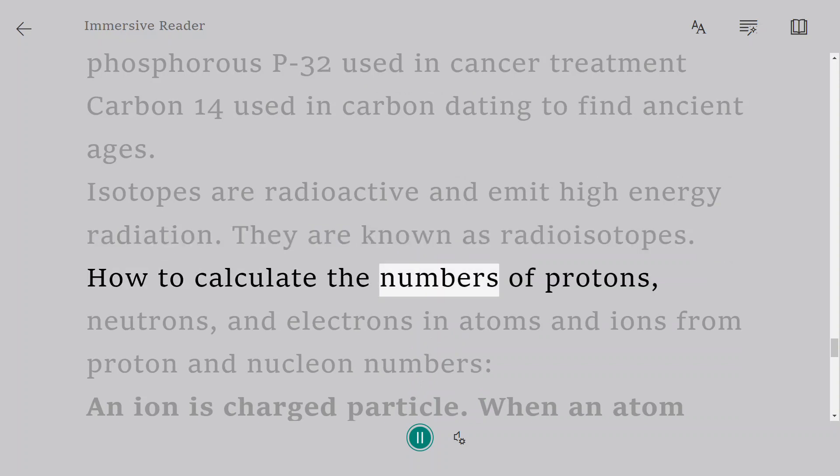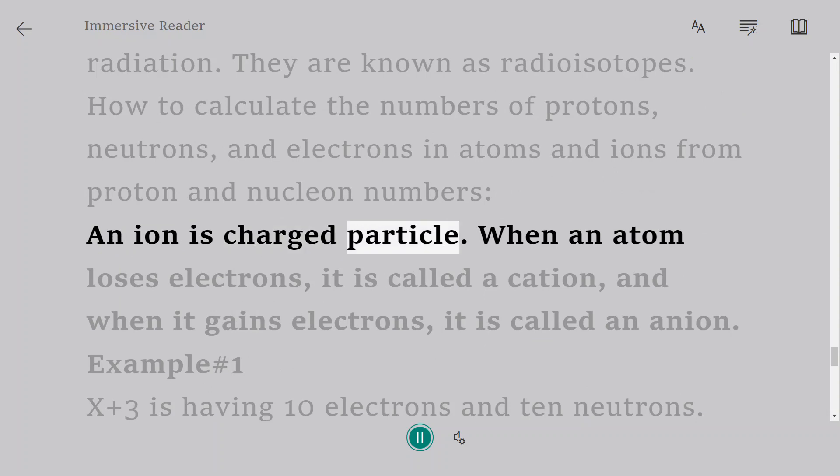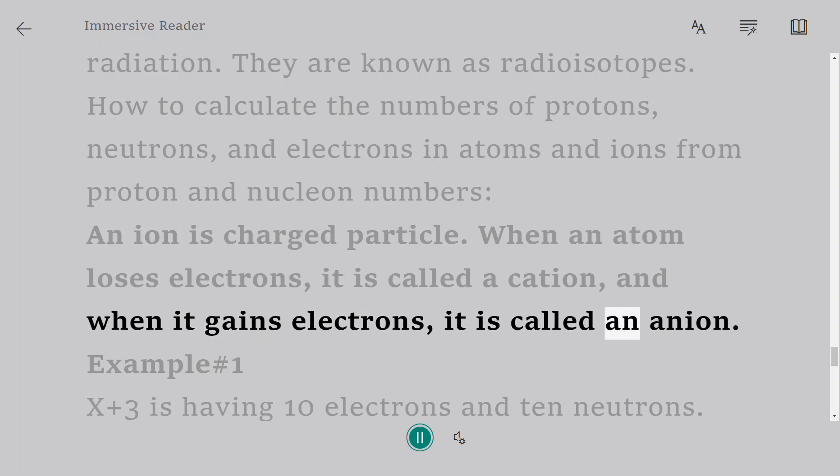How to calculate the numbers of protons, neutrons, and electrons in atoms and ions from proton and nucleon numbers. An ion is a charged particle. When an atom loses electrons, it is called a cation, and when it gains electrons, it is called an anion.